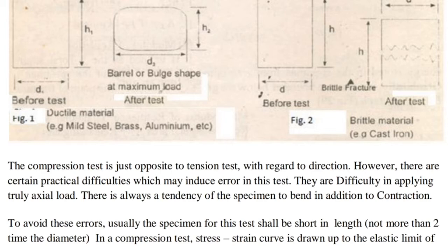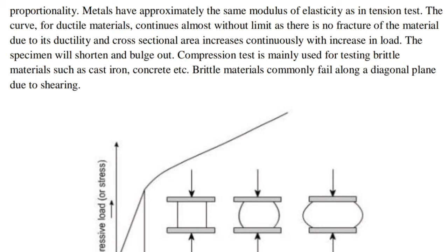In a compression test, the stress-strain curve is drawn up to the elastic limit of proportionality. Metals have approximately the same modulus of elasticity as in a tension test. The curve for ductile materials continues almost without limit as there is no fracture, and the cross-sectional area increases continuously with increase in load. The specimen will shorten and bulge out. Compression test is mainly used for testing brittle materials such as cast iron and concrete. Brittle materials commonly fail along a diagonal plane due to shearing.